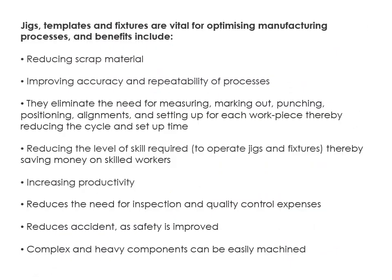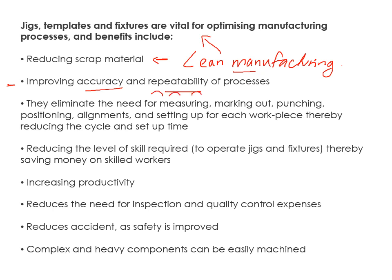Now for a really important slide on why we use production aids. They reduce scrap material — always aiming for lean manufacturing to reduce costly waste. You get improved accuracy and repeatability: the process can be done over and over with consistent accuracy. They eliminate a lot of human error by removing the need for measuring, marking out, and lining things up. This also makes the process much quicker, reducing the cycle time — how long it takes to make each product.